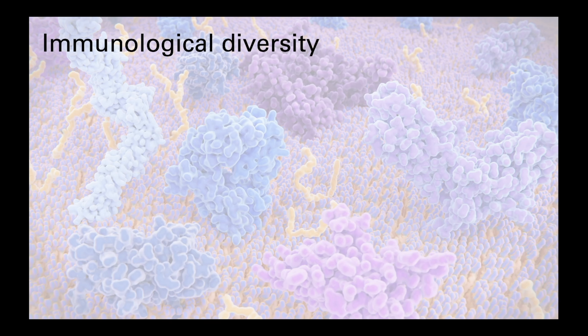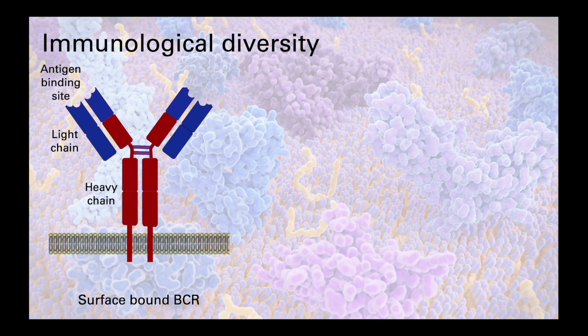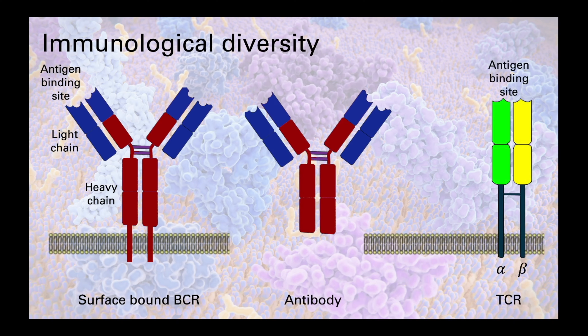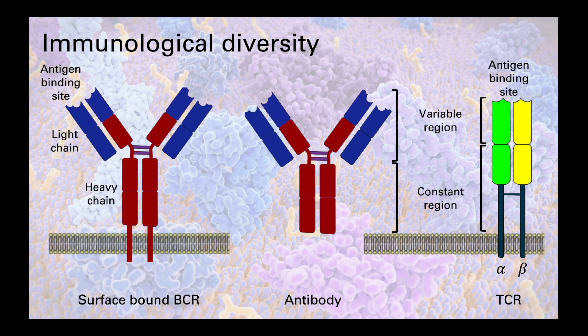The reason we are talking about B and T cells together when it comes to diversity is because a lot of the processes are the same in the different receptors. If you look at the overall structure of the BCR or antibody and the TCR, you can see that they are similar, with domain-like structures with constant and variable regions. So it's not surprising that the diversification process probably co-evolved.